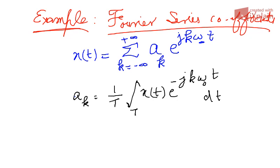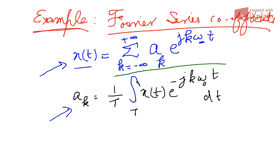We have to evaluate this integral to find the a_k values, which give us the representation of a continuous-time periodic signal as a summation of complex exponentials. These exponentials are actually sinusoids — cosine and sine waveforms — because we can use Euler's identity to write e^(jkω₀t) in rectangular form as cos(kω₀t) + j·sin(kω₀t).